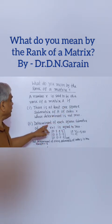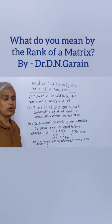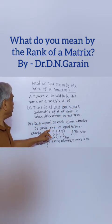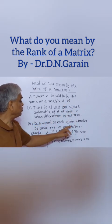Number two, determinant of each square sub-matrix of order small r plus one is equal to zero.